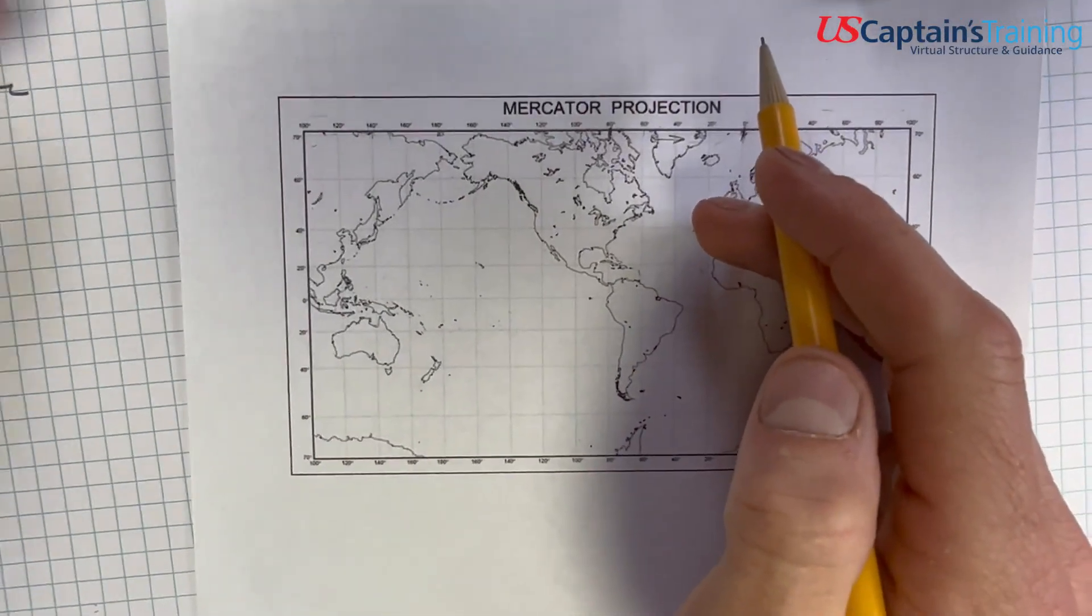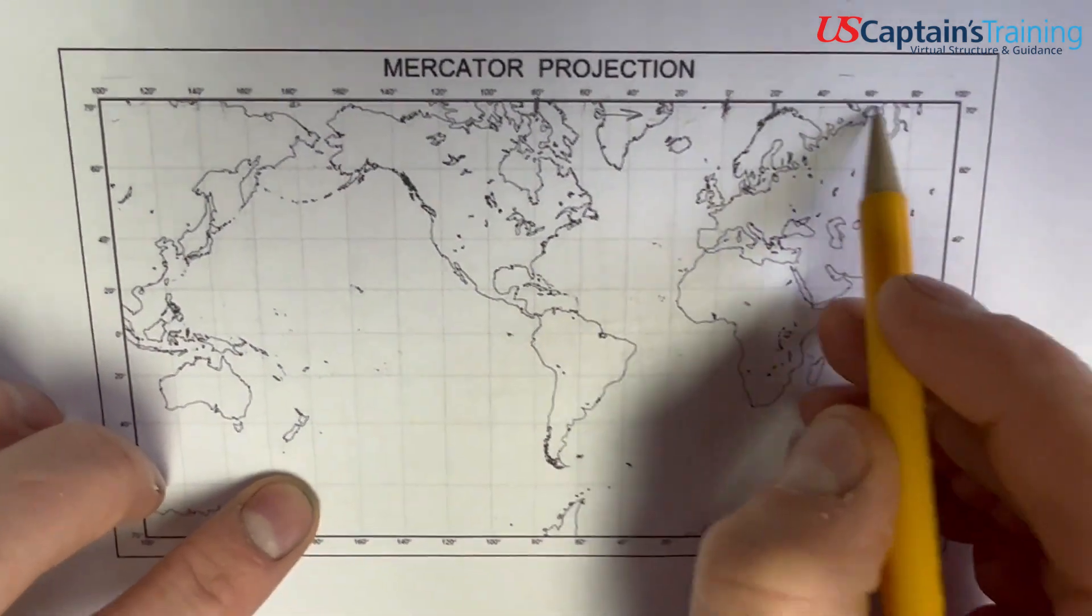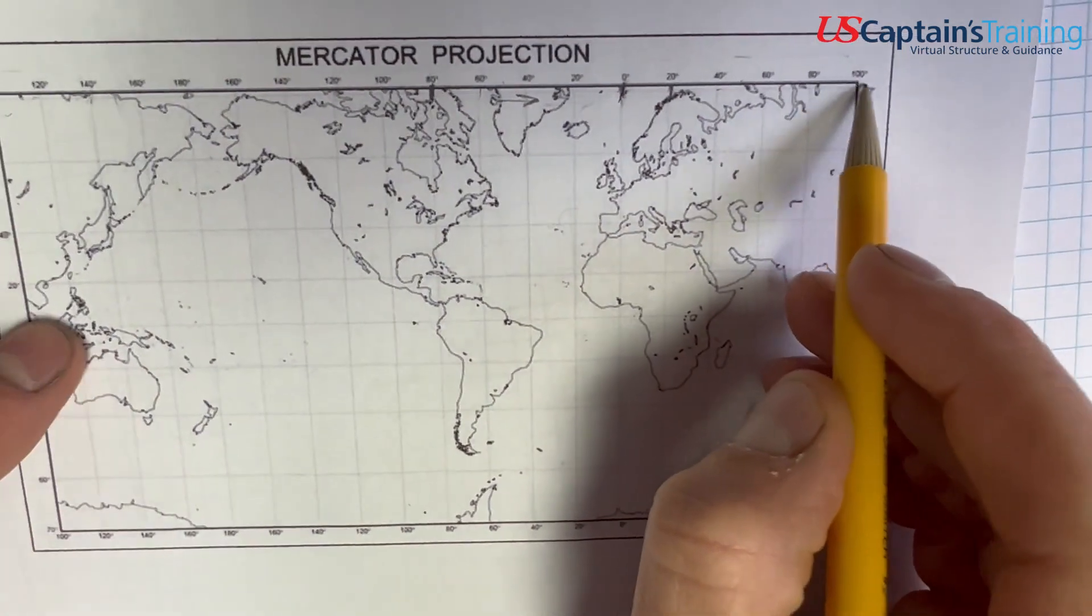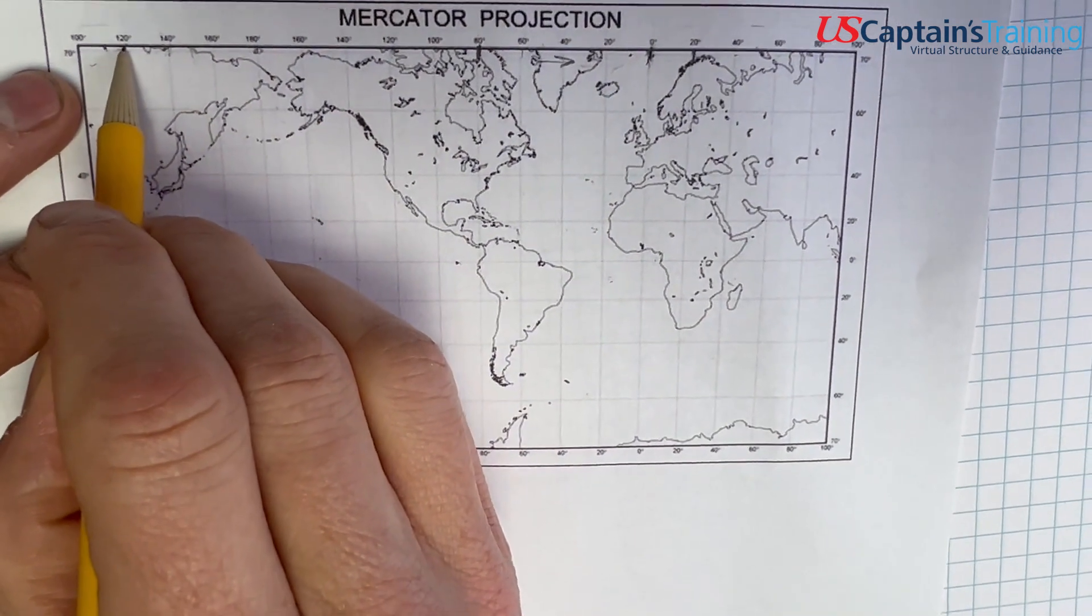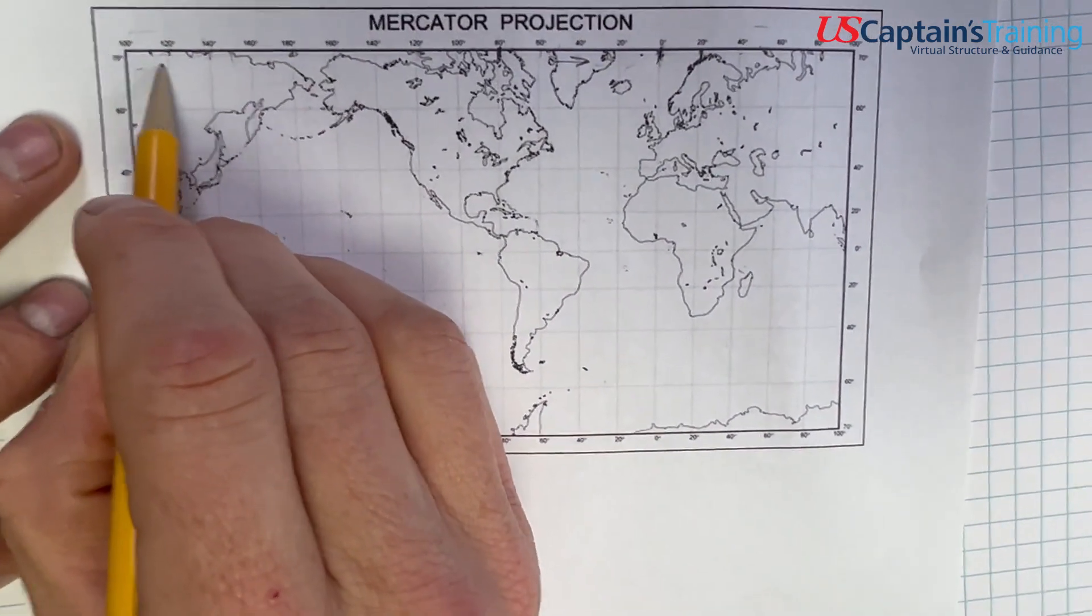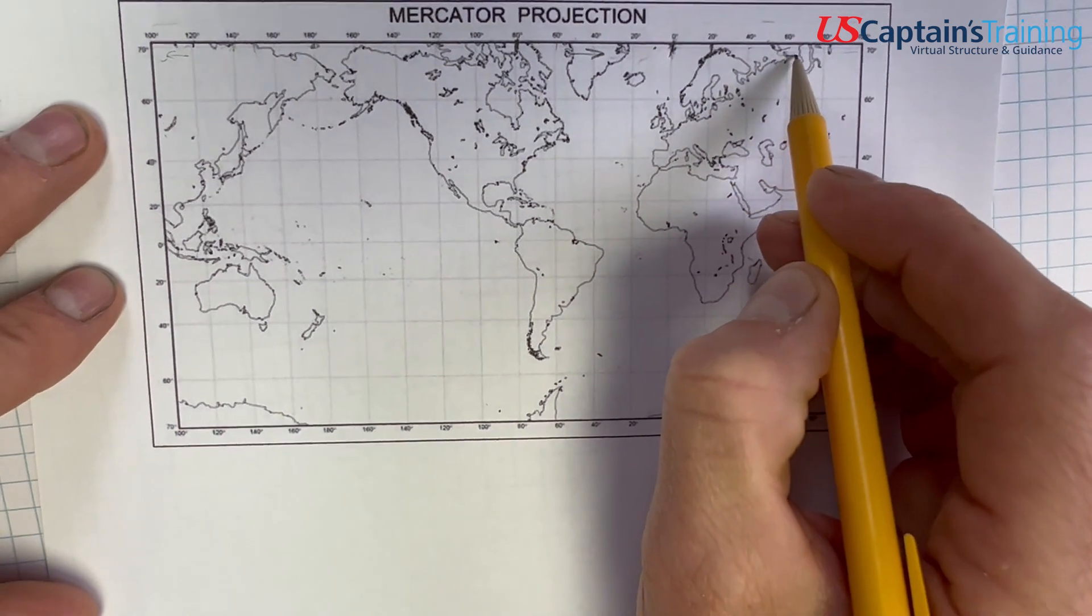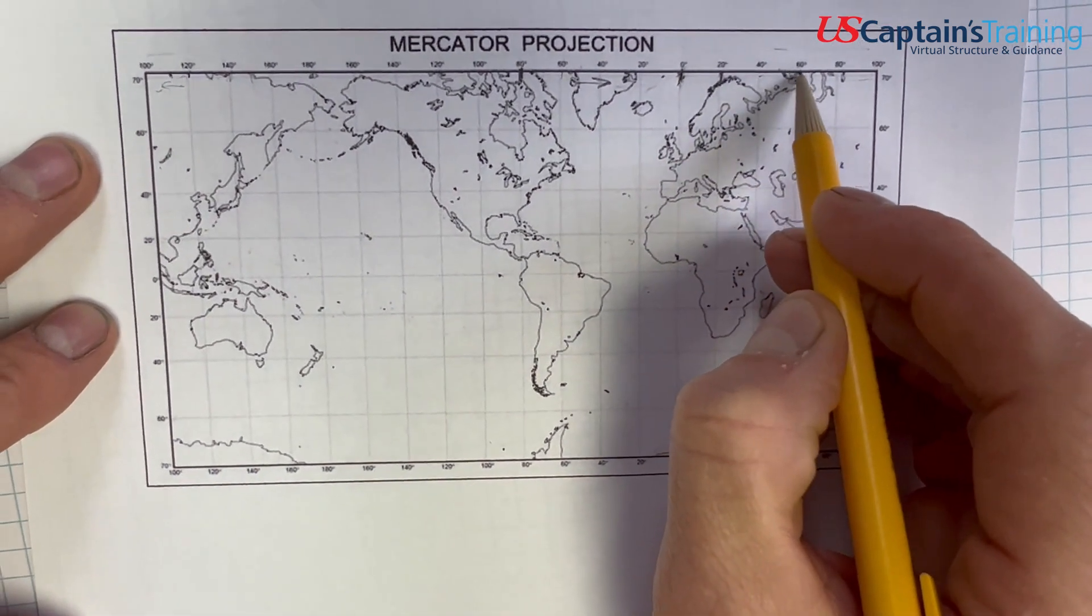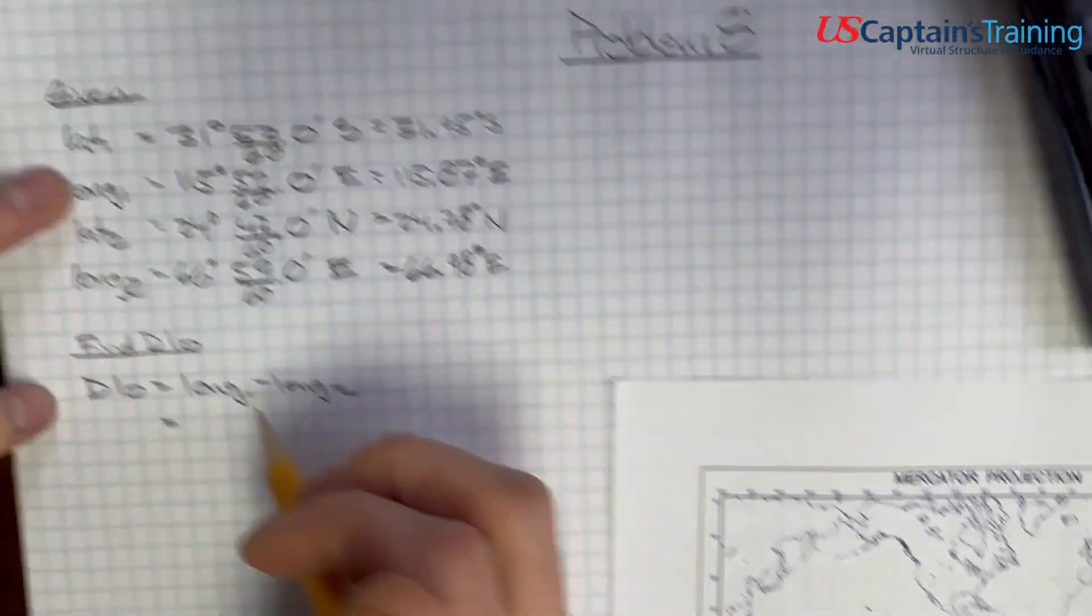So, the first one, we started at 115 east. So, here's 0, 20, 40, 60, 80, 100. Well, we're over here, 120. So, we started about here. And we went to 66. So, we went west. We went west. To 66, somewhere in here. So, we're just going to straight subtract these and get the right answer.